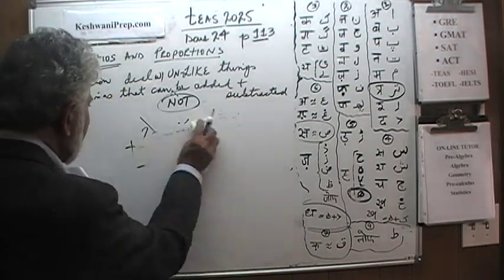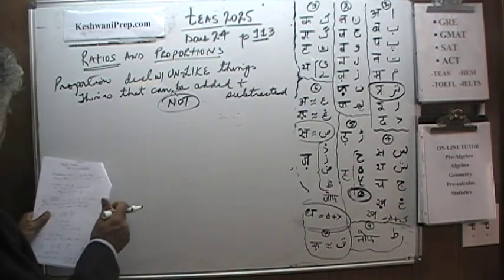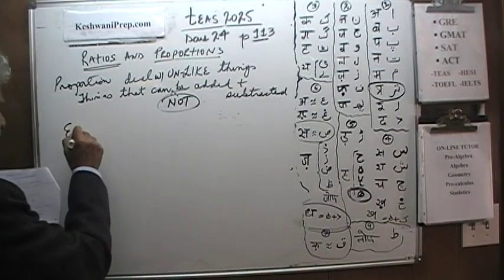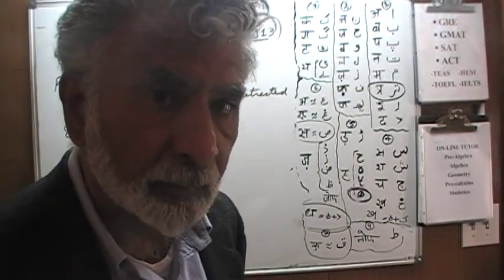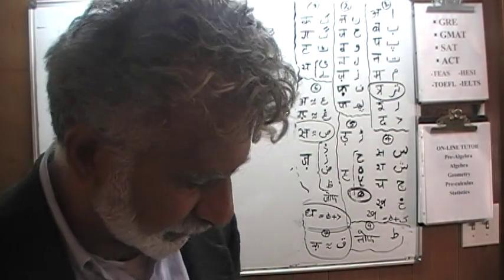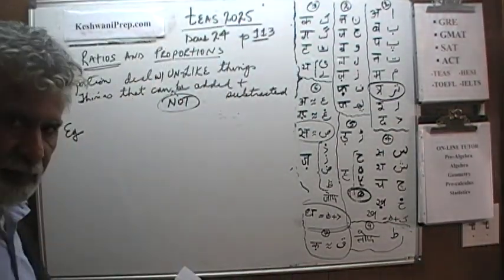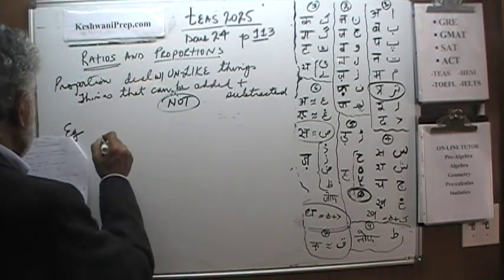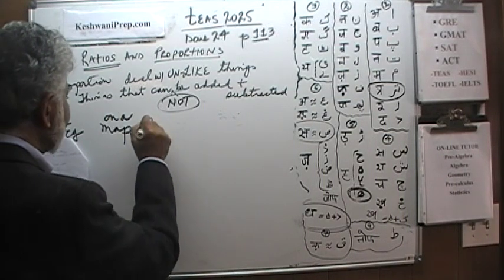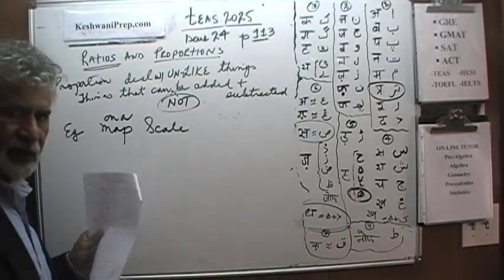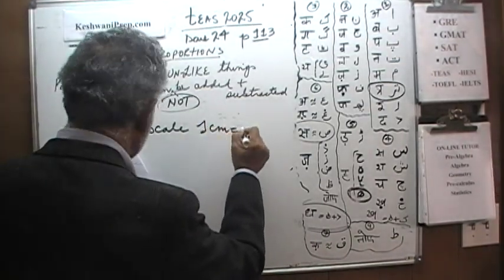Now that we understand the concept, let's look at a couple of problems from the book. Here's the first one. This is the example they give you on page number 113, and then we'll do one practice problem from page 114, practice problem number 4. Let's first look at the example on page 113. We are told that on a map, the scale used is 1 centimeter represents 20 miles.